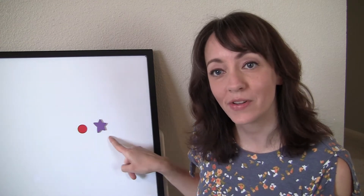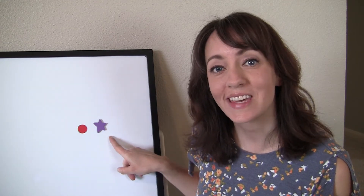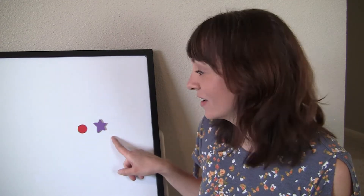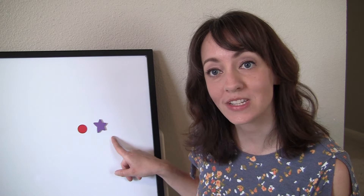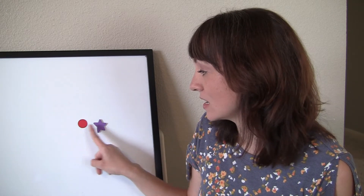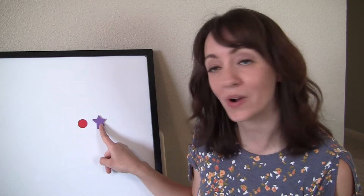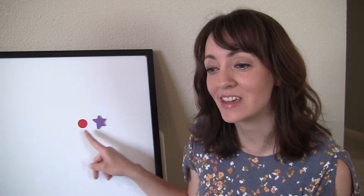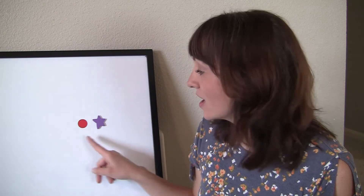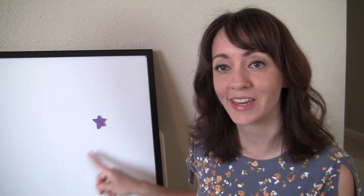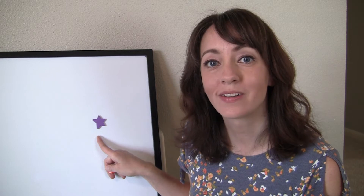For my first example, the word is keyboard. Say keyboard. Keyboard is made up of two words: key-board. It's also two syllables. Key-board. If I say keyboard without the key, I'm left with the word board.